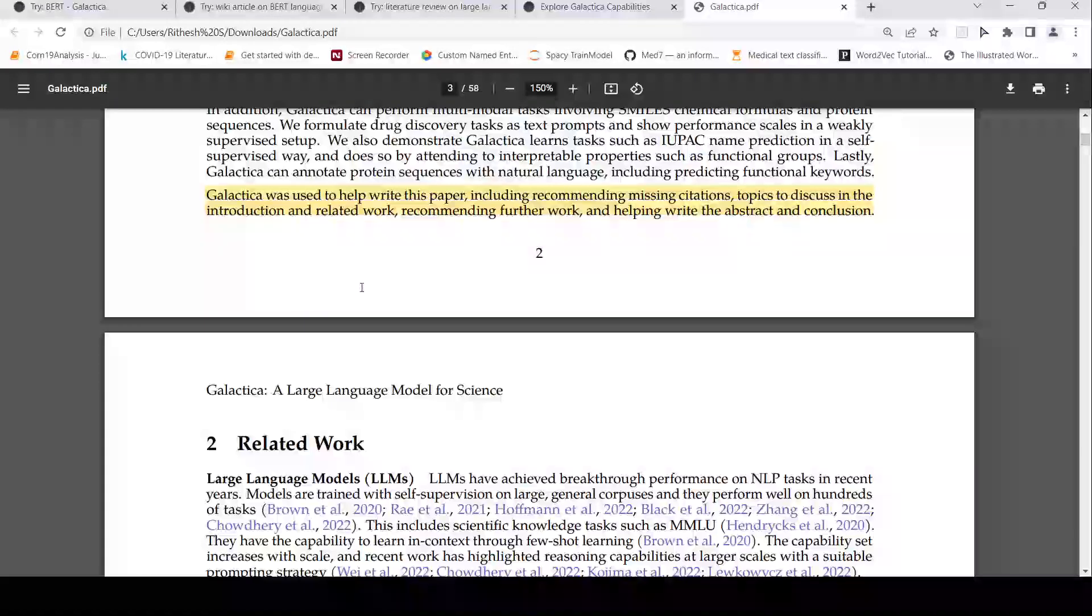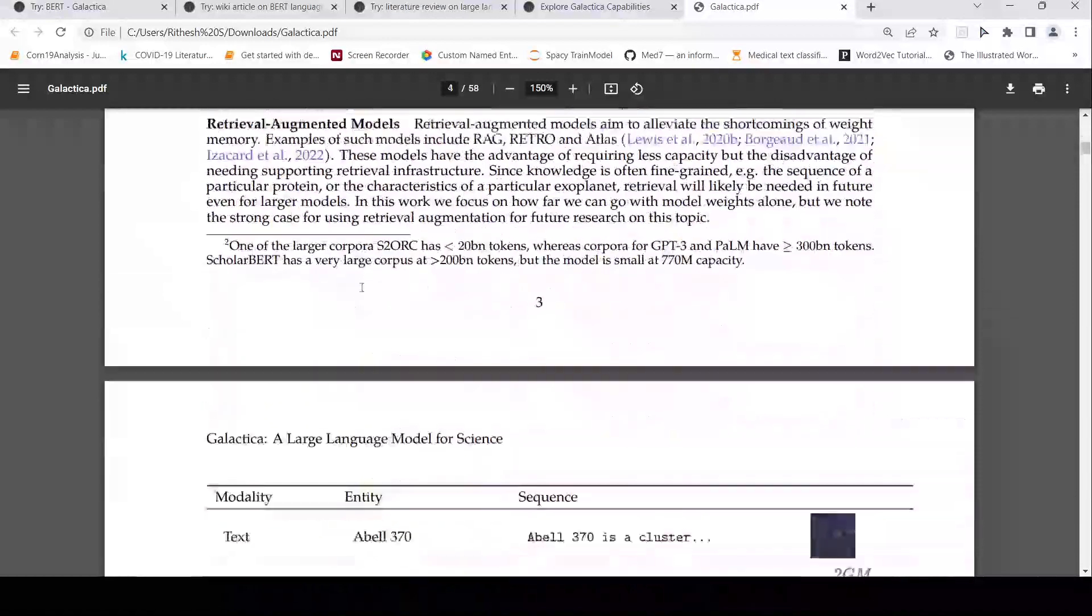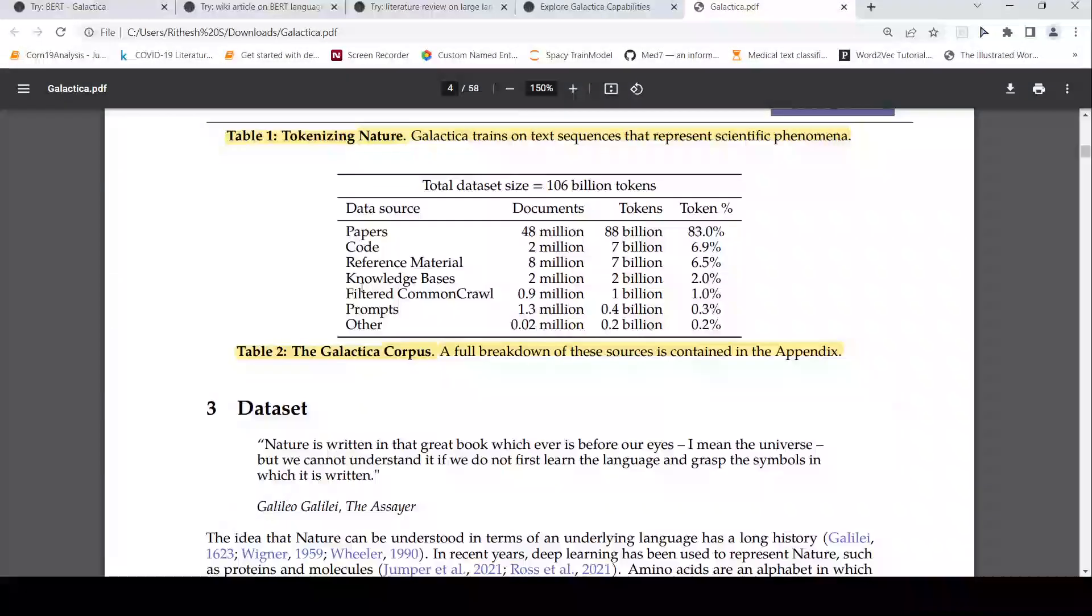This is a huge data set on which it has been trained. There are some details over here. Let's have a quick look. This is the total data set size 106 billion tokens. And here are your data sources: papers 48 million papers, code 2 million, reference material 8 million. This is really huge size on which it has been trained. And this is more curated data when compared to other large language models.